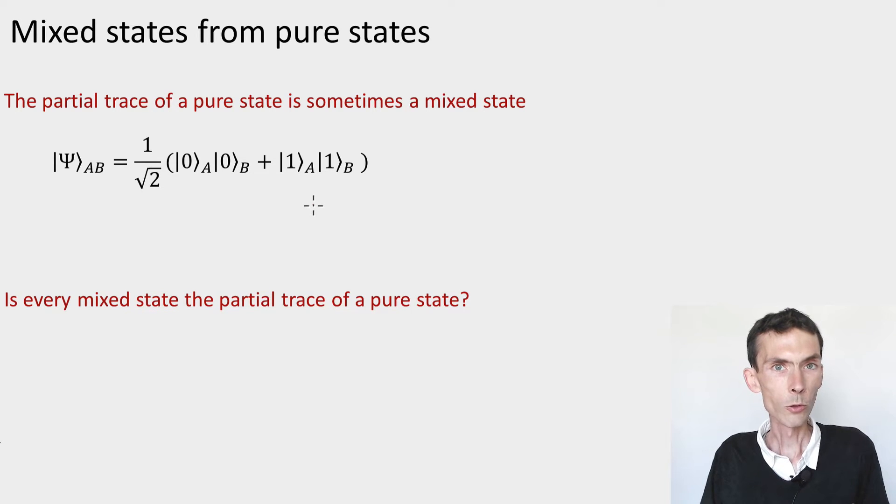So let's quickly compute the reduced density on A. We know how to do that. We have to choose a basis B for the B system. Here it's appropriate to choose the standard basis for B. To this basis, we can associate POVM elements that represent a partial measurement of the B system in the basis B.